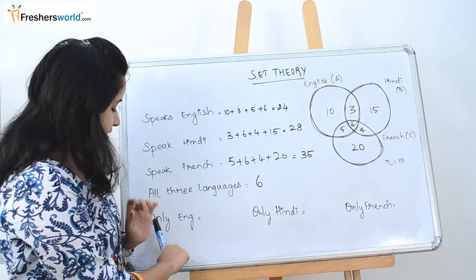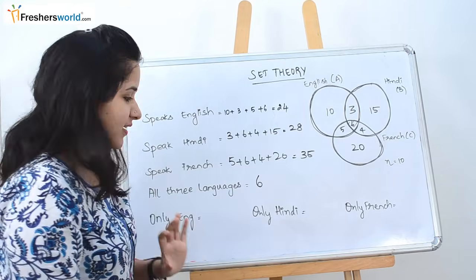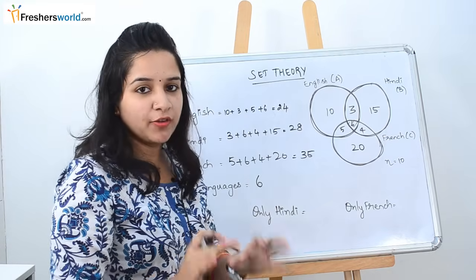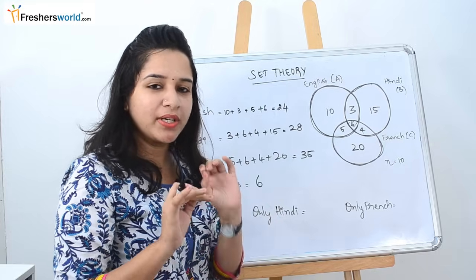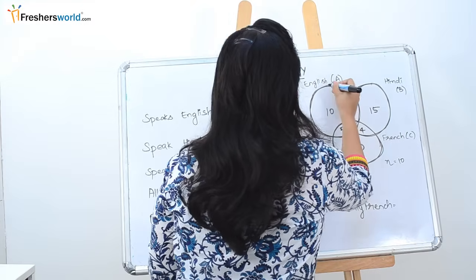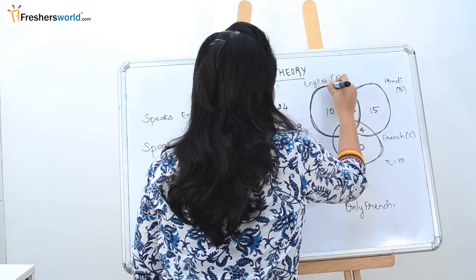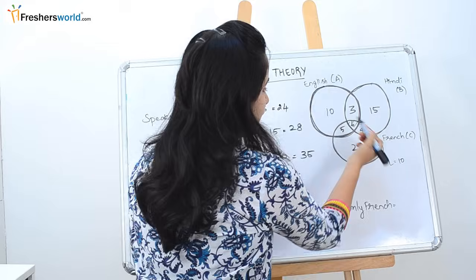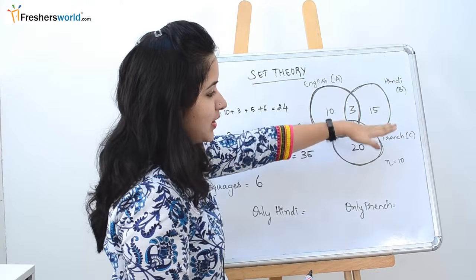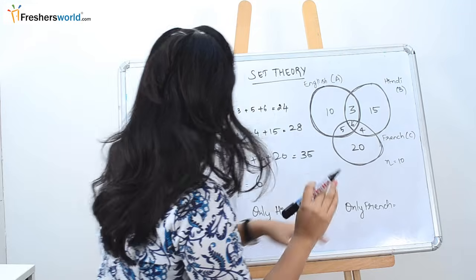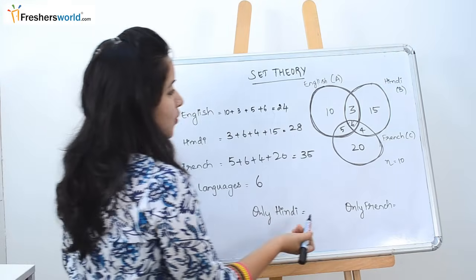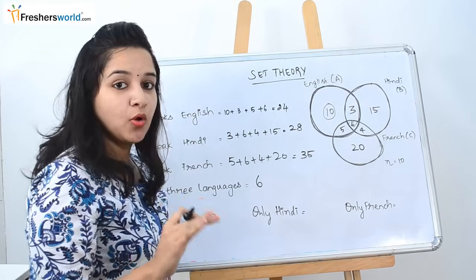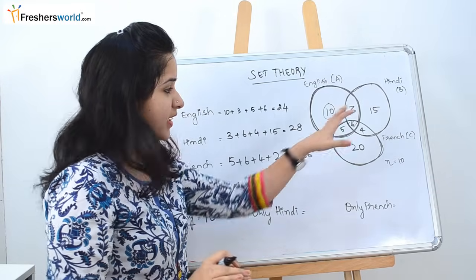The next question asks for the number of people speaking only English — they don't want people who are speaking Hindi or French. For the earlier English question, we took the whole circle. But values 3, 6, and 5 are combinations with Hindi and French. Since the question asks for only English, the answer is just the value 10. So 10 people know only English but don't know Hindi or French.